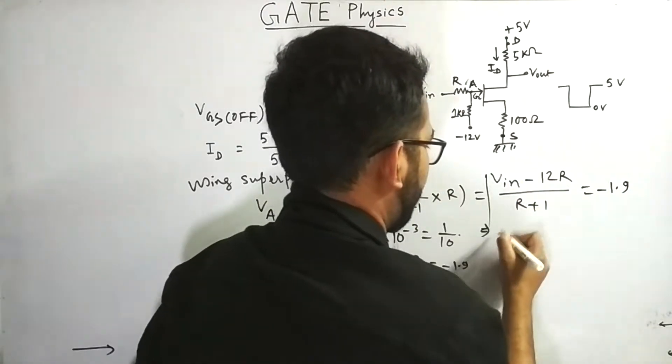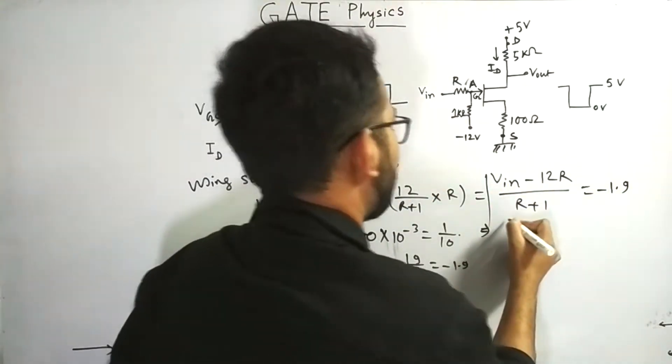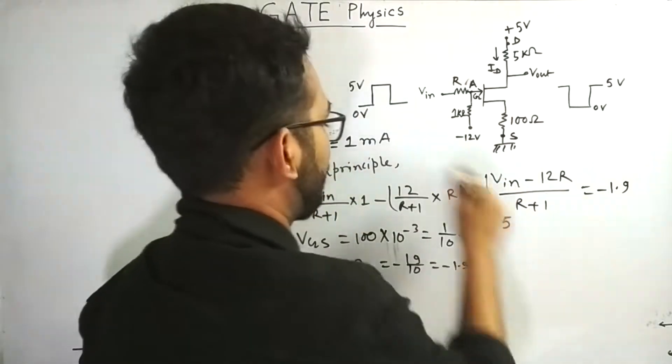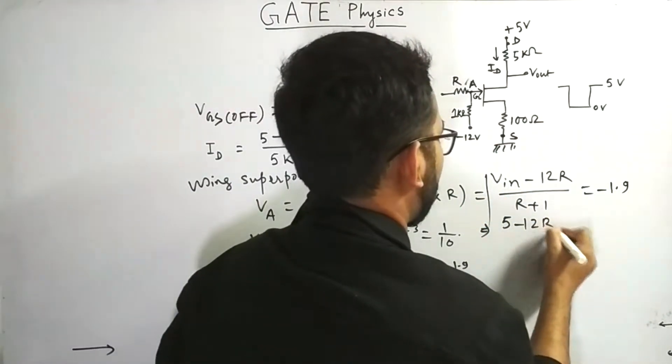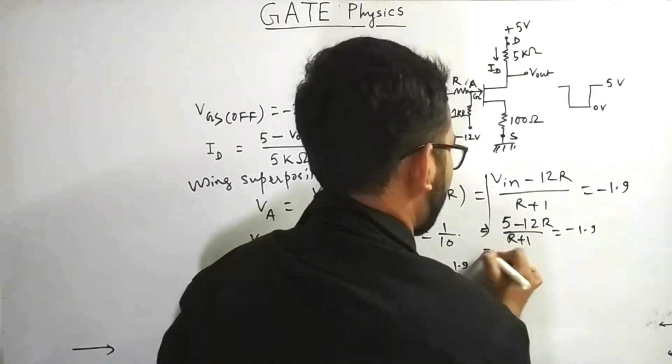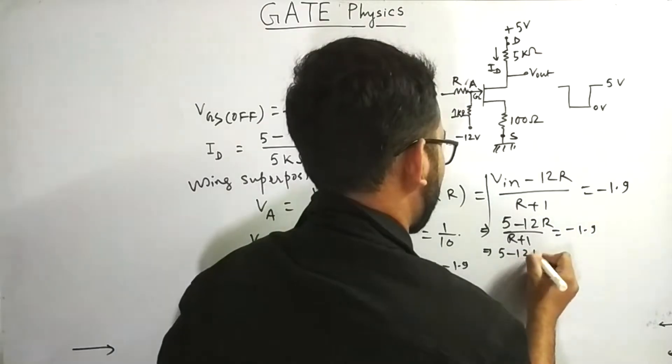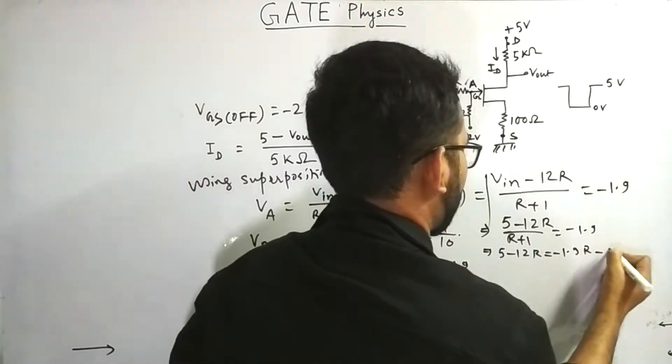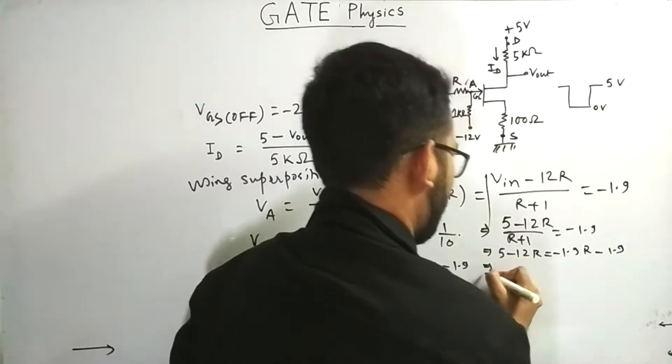Therefore, what can we get from here? And Vin, in the place of Vin, we will write 5 because Vin is 5 volts. So 5 minus 12 R by R plus 1 equals to minus 1.9. Therefore, 5 minus 12 R equals to minus 1.9 R minus 1.9.